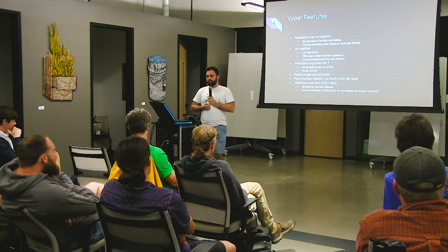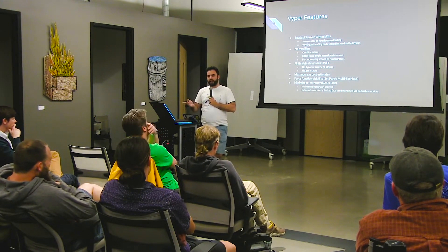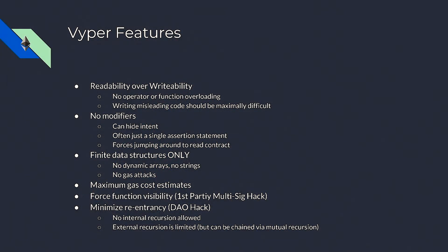We force function visibility, which was the issue behind the first Parity multi-sig hack. Solidity used to assume a function was public if you didn't specify visibility, and that could lead you to lose track of what is actually what. By forcing it, we make sure you understand exactly what the visibility is. We minimize reentrancy by disallowing calls from functions that you define below your current function — you can only call functions that have been defined before. This disallows simple recursion in your contract.